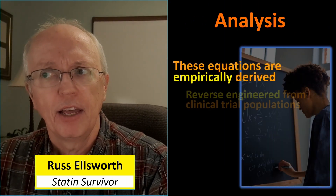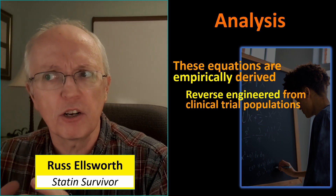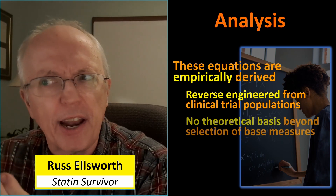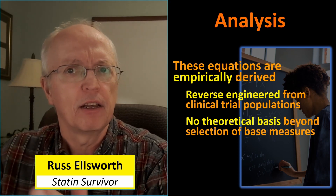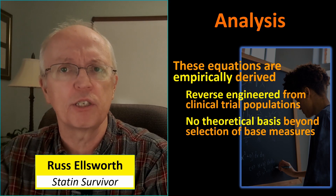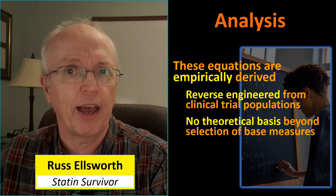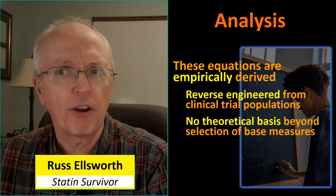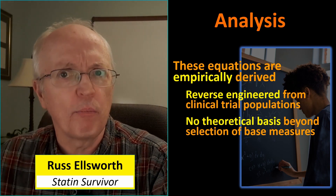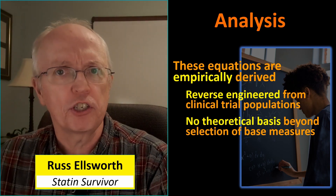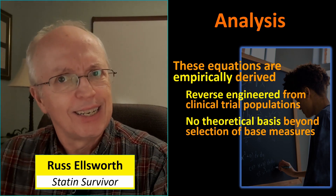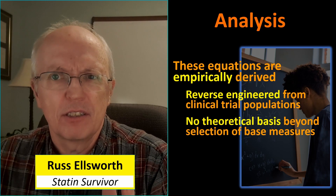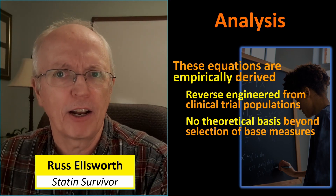These equations are empirically derived — reverse engineered from clinical trial populations. There's no theoretical basis for why it should be a particular constant applied to a value. The selection of values was based on looking at the data and saying these values seem to have the most impact, but by how much is very hard to tell. There's no theoretical basis for using one coefficient for age and a different one for blood pressure — that's just the way it has to be.